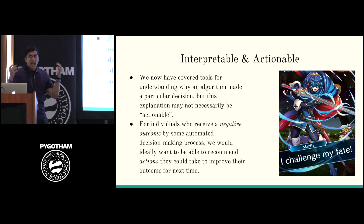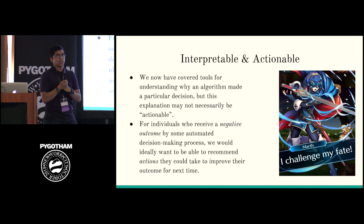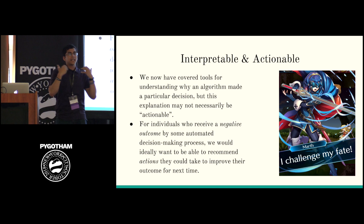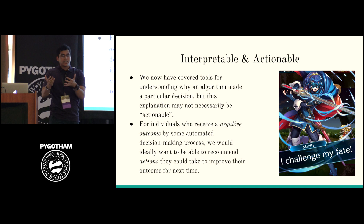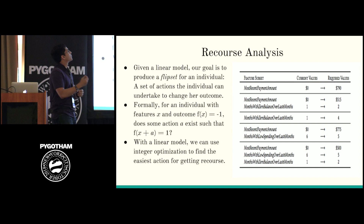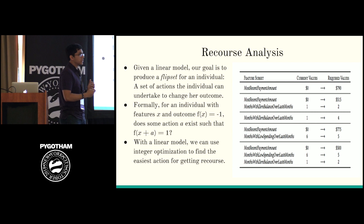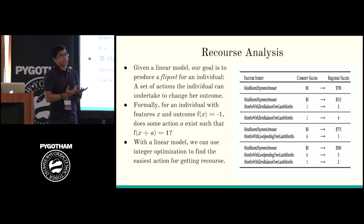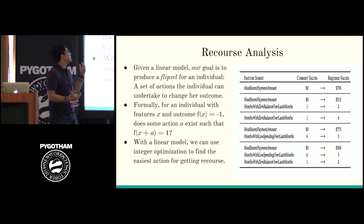This ties back to the keynote — people want to be in control of their own destinies, to take charge of their own actions. With recourse, we can tell you what you need to do to get a better outcome. We've gone from a faceless arbitrary judgment of your destiny to a cool mediator that says: here's all the things you need to do to get a bank loan, here's what you need to do to get parole. Since this is a new paper in early stages, it currently only works for linear models. The goal is to find a 'flip set' for an individual.